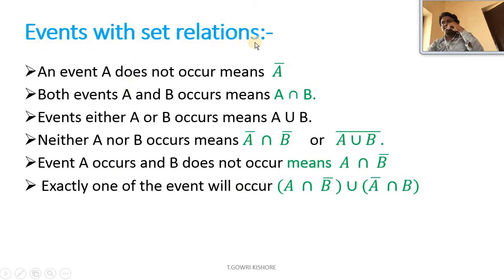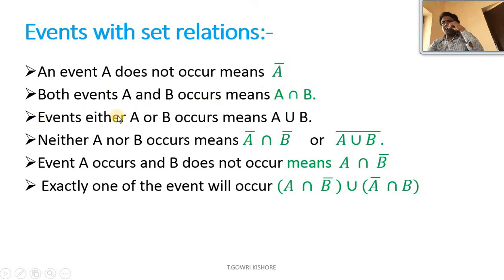Events with set relations: an event A does not occur is represented as A-bar. Both events A and B occur means A intersection B. Event either A or B occurs means A union B. Neither A nor B occurs means A-bar intersection B-bar, or equivalently A union B whole bar. Event A occurs and B does not occur means A intersection B-bar.